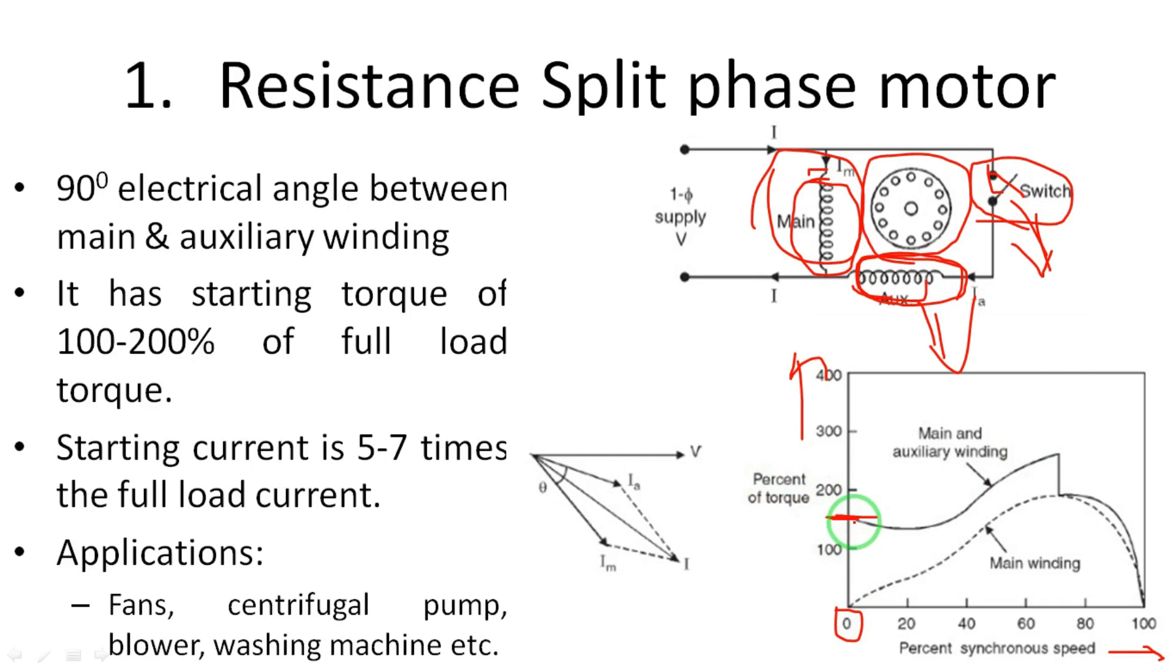It will slowly develop the torque and increase the speed. When the speed attains synchronous speed, then torque will be zero. In the phasor diagram, I_a means auxiliary current, I_m means main current, and the resultant of two currents is the total current.